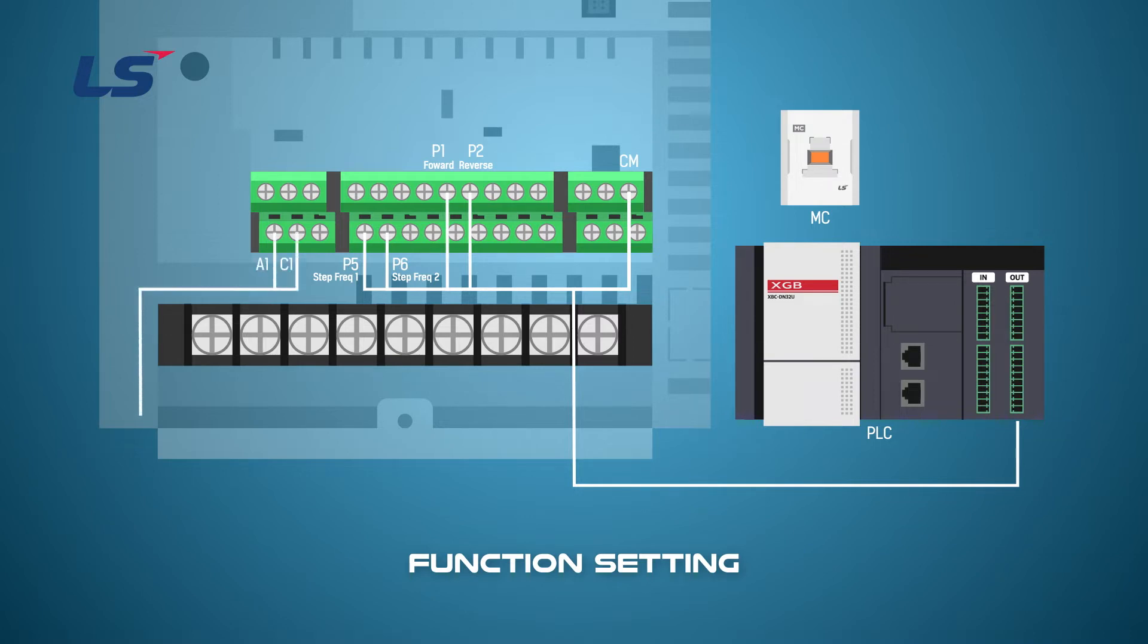The brake control signal of the inverter should use contact A to prevent the lift from falling in the event of a trip or an abnormality in the entire facility.